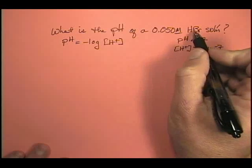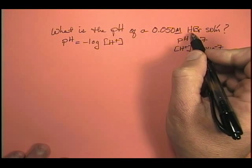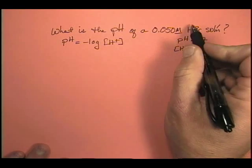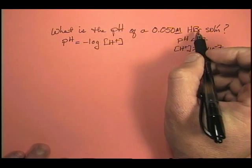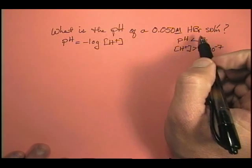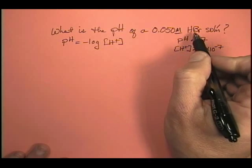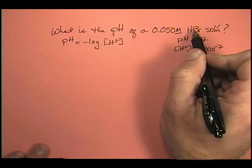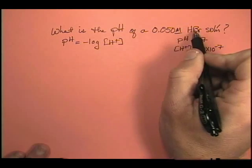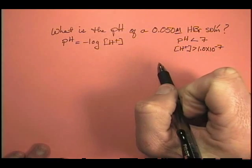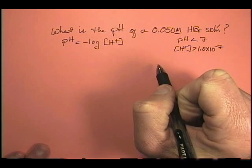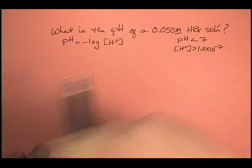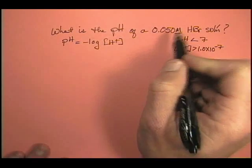Well, look at this. This is a monoprotic acid. In other words, one mole of hydrogen for every mole of HBr. So I know, and this is a strong acid. We're not going to mess with weak acids in this class. We know that the molarity of an acid is the molarity of its hydrogen ion. Once again, the molarity of the acid is the molarity of the hydrogen ion.